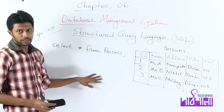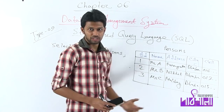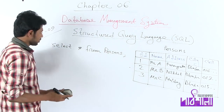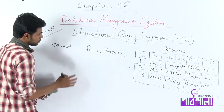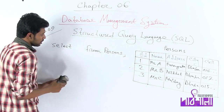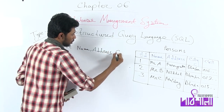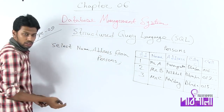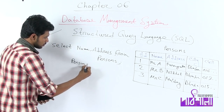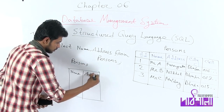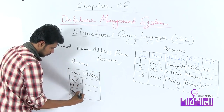But if you want to see specific columns from the whole table, you will see the person's name and address. So you will see the person's name and address. If you want to write star, you will see all columns — name, address. Select name, address from persons. As you run, you will see the name and address. Here we have Mr. A, Mr. D, Mr. C.